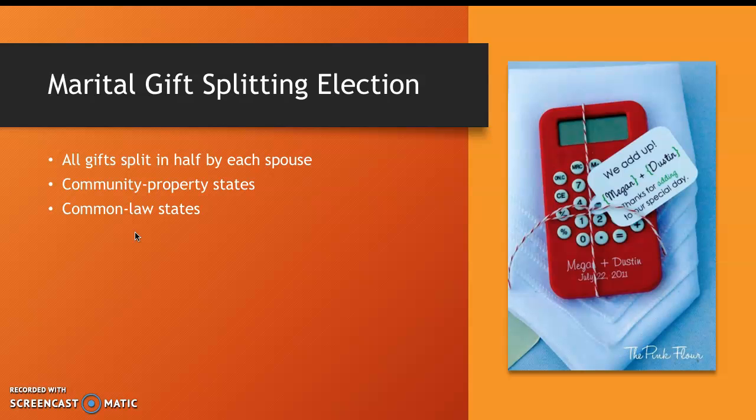In marriage, there is often a better half. When it comes to the gifts given in a year, they can also be split in half. In community property states in the United States, the automatic assumption is that all acquired property is already evenly owned in a relationship. In common law states, one spouse can own more of the property if they make more of the total household income. Thus, with the gift splitting election, couples in both types of states can be treated equally.